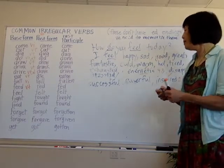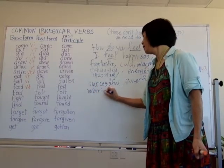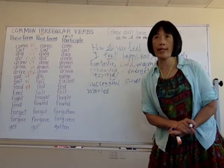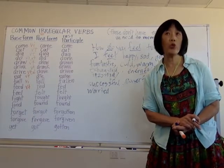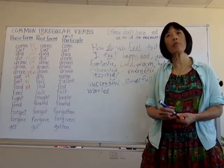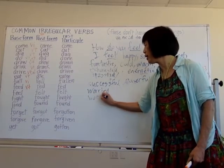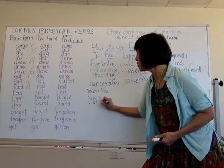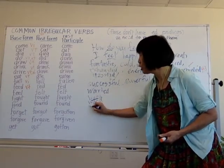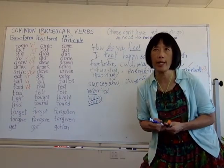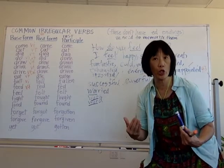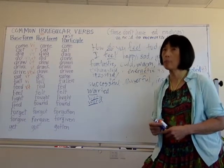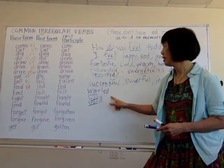Do you ever feel worried? Here's how we pronounce it: worried. When we see 'W-O,' there are different pronunciations, but think of the word 'work' — that 'er' sound. Keep the same lip shape and say: work, worried. The 'er' sound is the same: worried. 'I'm worried about my work.' How do you feel? I feel worried.